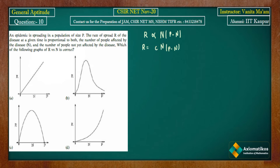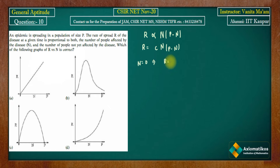The rate r equals c times n times (p minus n), where c is some constant. So when n is 0, r is 0, and when n equals p, r is also 0.